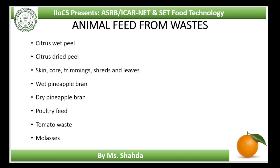Animal feed from wastes: waste and by-products obtained from fruits and vegetables are a good source of cattle and poultry feed. Citrus wet peel: citrus peel contains 6% protein, 5% fat, 12% crude fiber, 5% ash and about 60% nitrogen-free extract. Wet peel contains 70–90% moisture and is consumed directly by animals. This practice is feasible only in the close vicinity of peel availability. Life of wet peel is very short due to rapid decay and sap leakage, making it transportable only short distances.